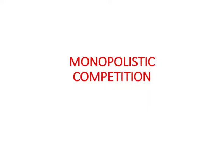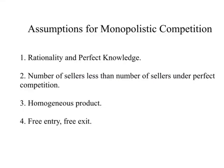We are trying to understand monopolistic competition. In my previous video we discussed under what circumstances monopolistic competition can arise. Here is a list of assumptions we have made for a market structure like monopolistic competition, which has some elements of monopoly and some elements of competition. The first assumption is rationality and perfect knowledge, which we retain for different market structures.